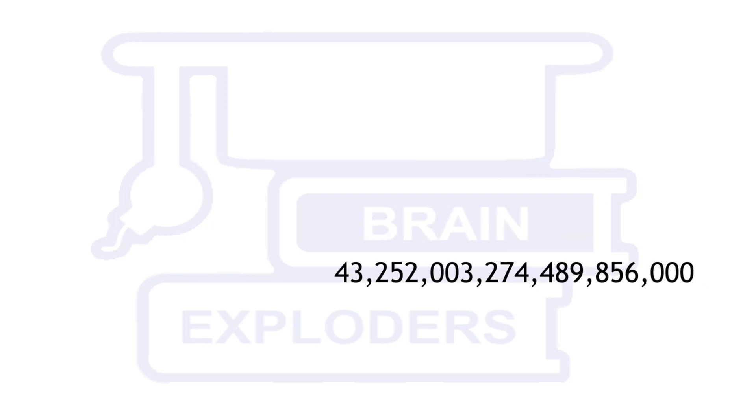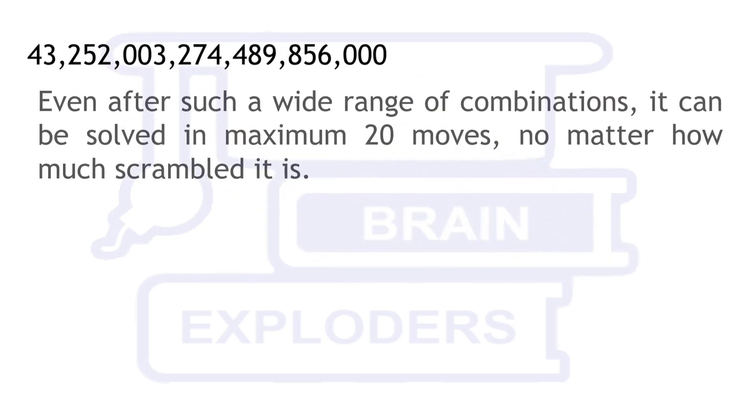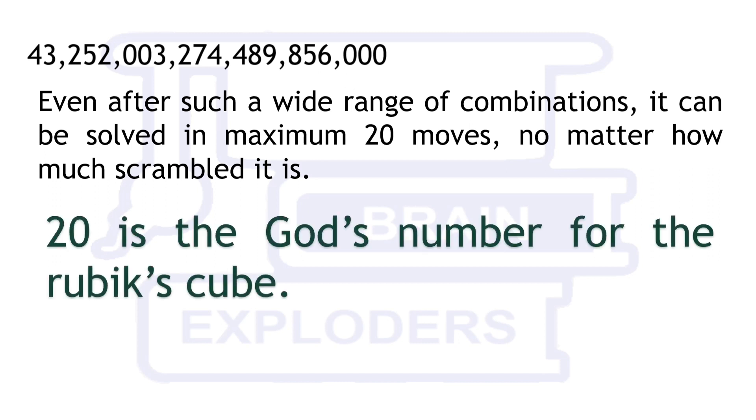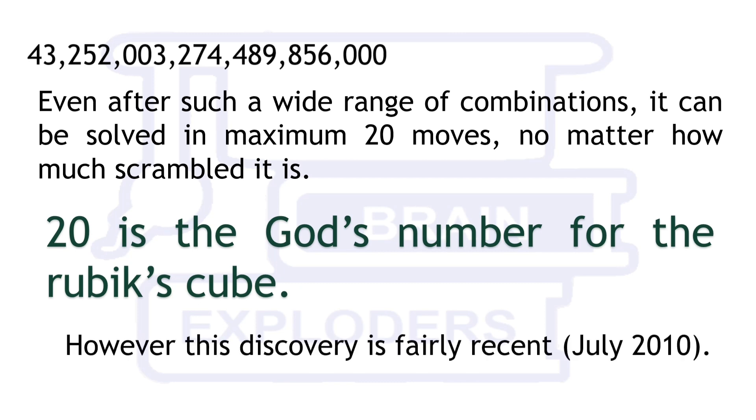Even after such a wide range of combinations, it can be solved in maximum 20 moves, no matter how much scrambled it is. 20 is the god's number for the Rubik's cube. However, this is a fairly recent discovery of July 2010.